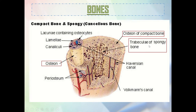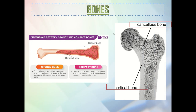This is the cancellous or spongy bone — you can see many pore-like spaces, that is your cancellous or spongy bone. On the other side, this is the cortical or compact bone — it is really compact and very dense. In terms of strength, compact bone is stronger than spongy bone.